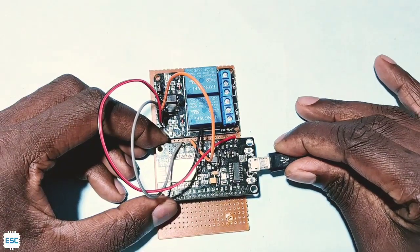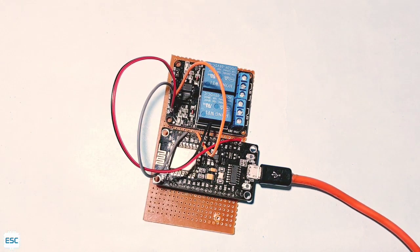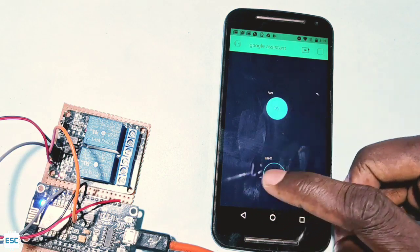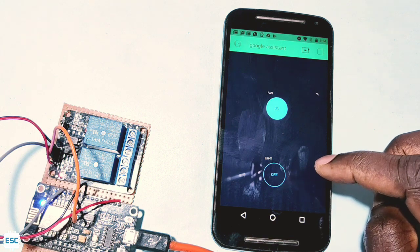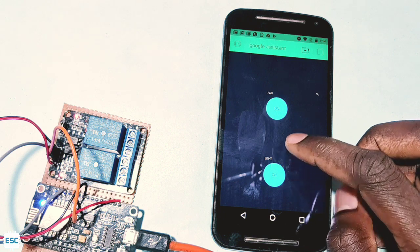Now let's power it again and check one more time. You can see the light is blinking so everything works perfectly. Now open Blynk app and test one more time. Everything works perfectly. You can hear the relay clicking sounds.